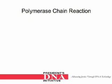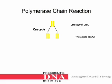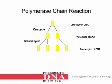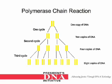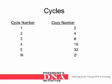Polymerase chain reaction is an exponential copying process. You start off with one copy of the DNA. After one cycle, you have two copies. After a second cycle, you have four copies. After a third cycle, you have eight copies. To determine the number of copies based on the cycle number, it is simply 2 to the power of the cycle number.